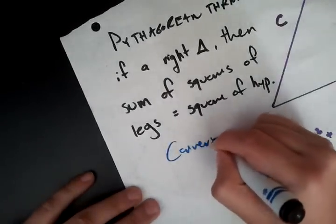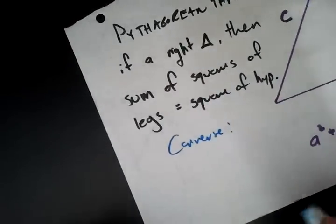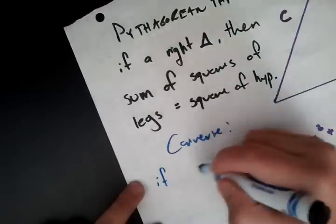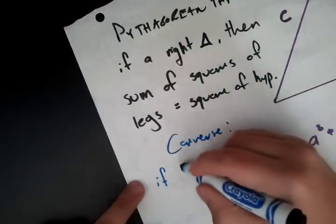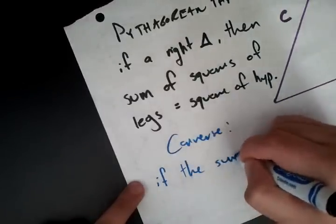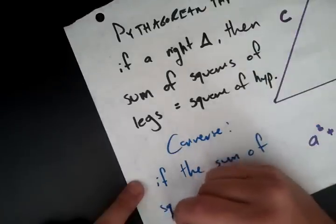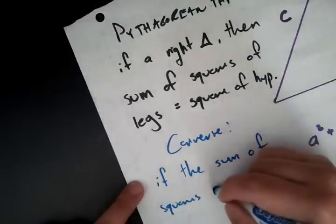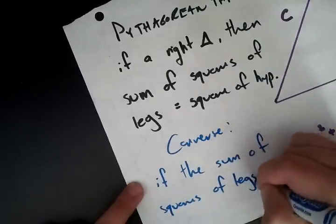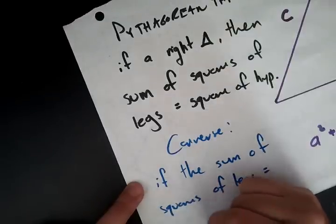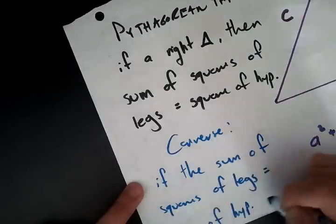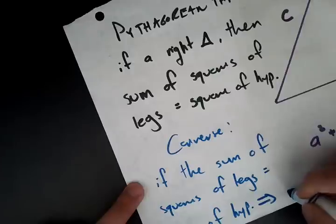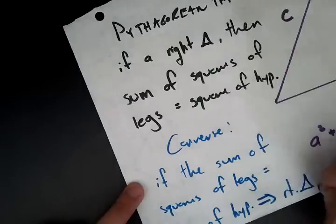Our converse states that if in any triangle, just a given triangle, the sum of squares of legs equals square of hypotenuse, then it is a right triangle.